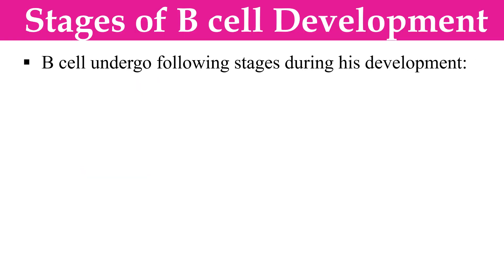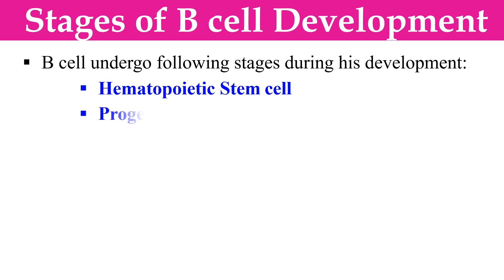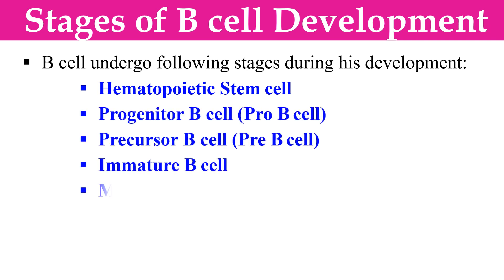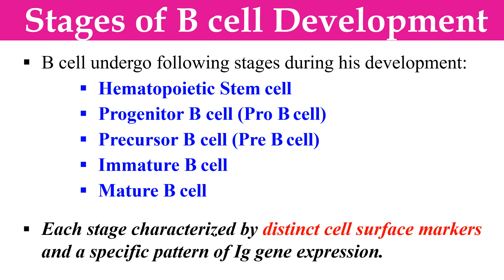Now, the stages of B cell development or maturation. During maturation, the B cell undergoes the following developmental stages: hematopoietic stem cell, progenitor B cell (pro B cell), precursor B cell (pre B cell), immature B cell, and mature B cell. The maturation progresses through these stages, and each stage is characterized by specific cell surface markers by which you can identify the stage of B cell development.